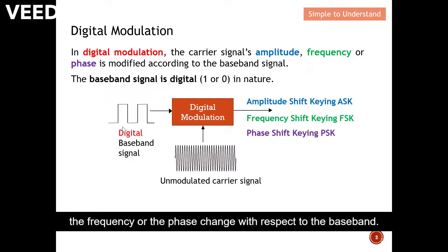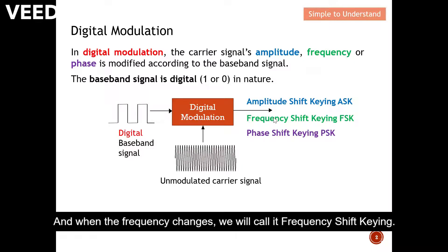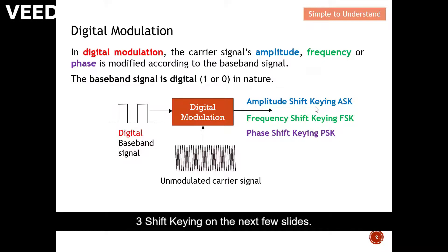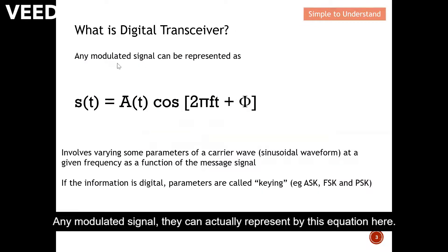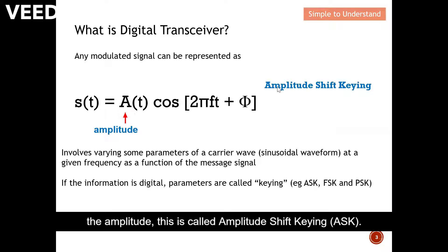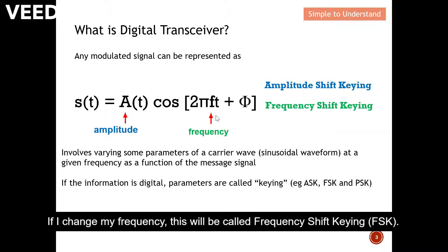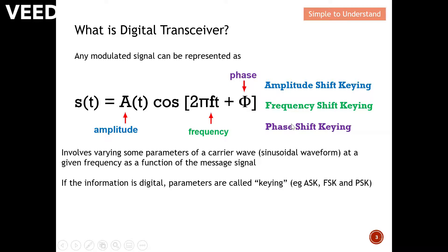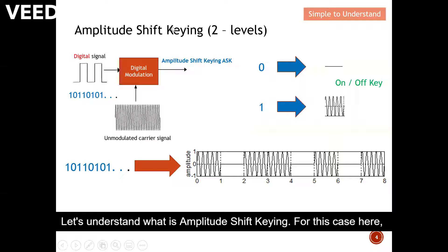The carrier's amplitude, frequency, or phase changes with respect to the baseband. When the amplitude changes we call this amplitude shift keying; when the frequency changes we call it frequency shift keying; and when the phase changes we call it phase shift keying. Any modulated signal can be represented by a general equation — changing amplitude gives ASK, changing frequency gives FSK, and changing phase gives PSK.